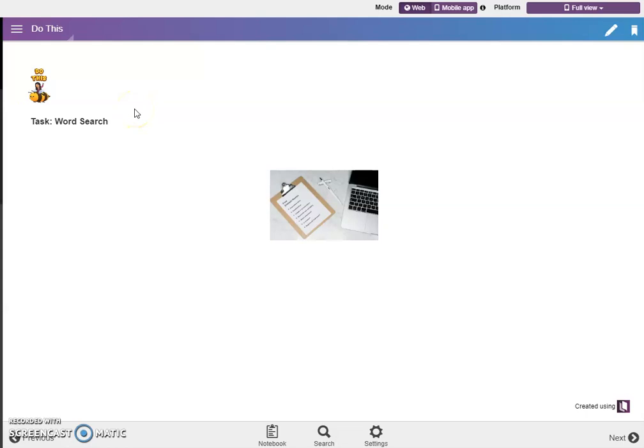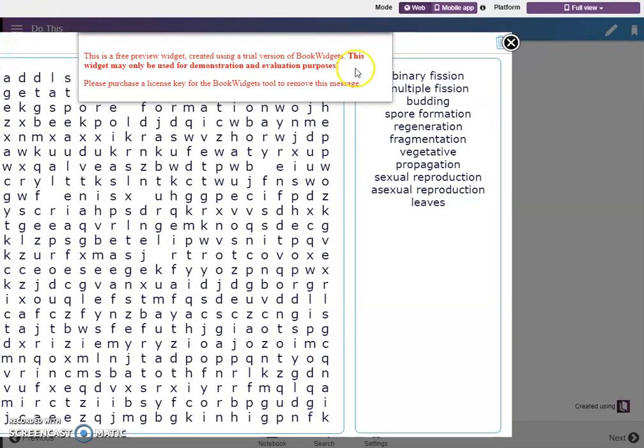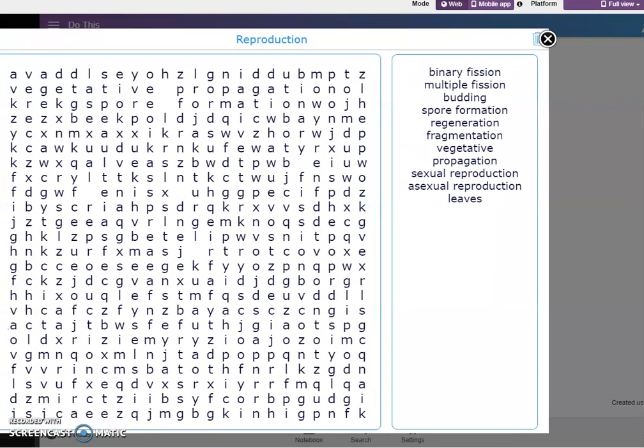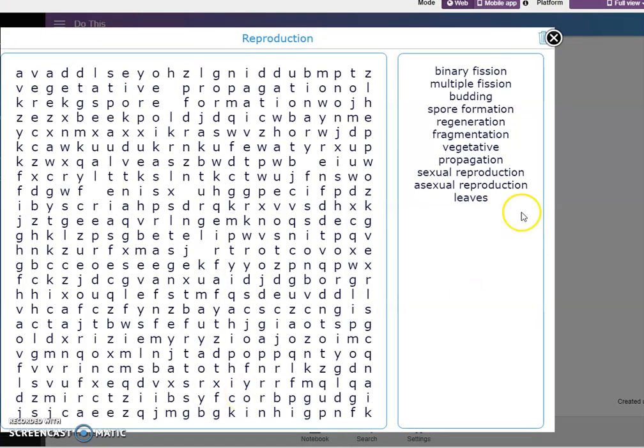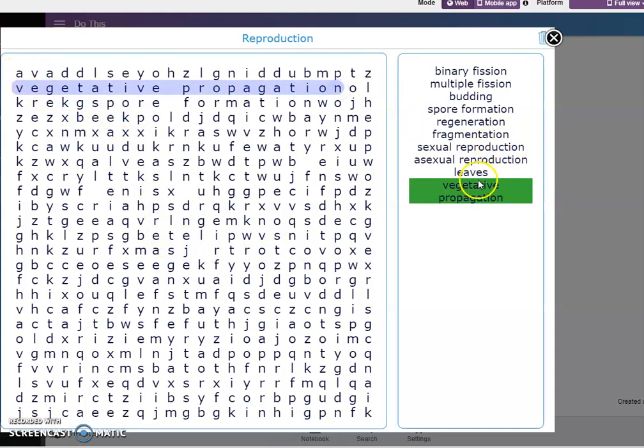And for their initial activity, they are going to search for these words here. These words are the words that we are going to use all throughout this topic because some of these are the types of asexual reproduction. All they have to do is locate that word or words and after they located all the words here, it will highlight everything and that congratulations message will pop out. For example, we have vegetative propagation, just click highlight and it will highlight here. So let's just delete that one and proceed to the next page.